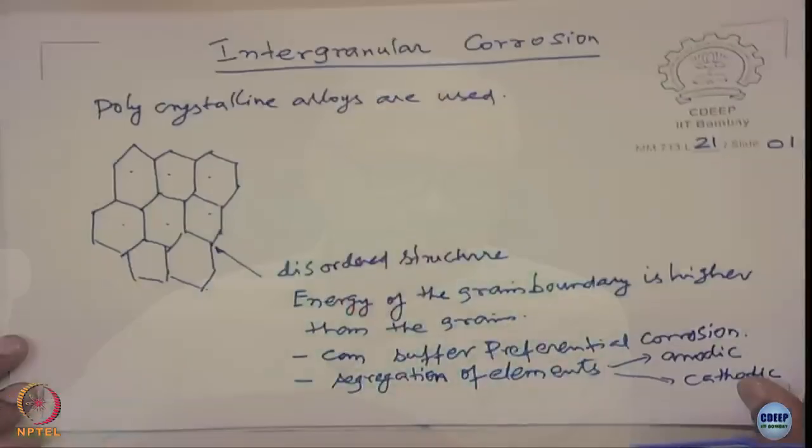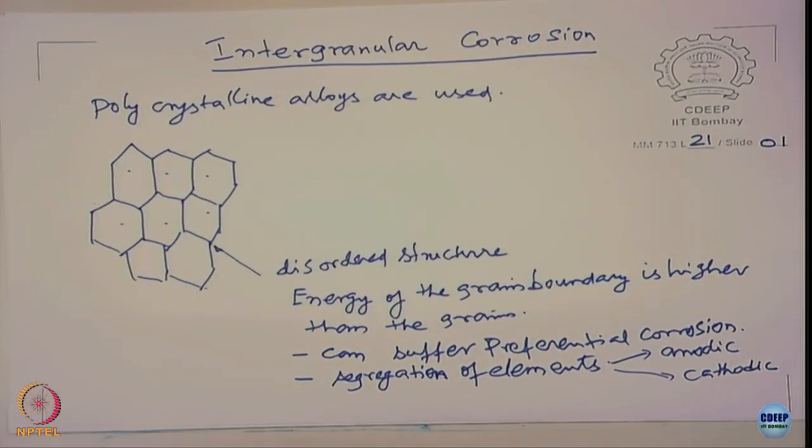This discussion brings out the mechanisms involved in intergranular corrosion and how to avoid it, with more emphasis on stainless steels — widely used in chemical process industries but susceptible to corrosion when welded under certain conditions. We call this term sensitization. Similarly, aluminum alloys undergo corrosion at grain boundaries due to certain heat treatments — we call that exfoliation corrosion, one type of intergranular corrosion.